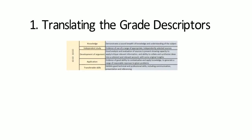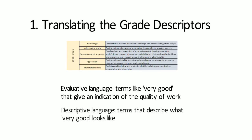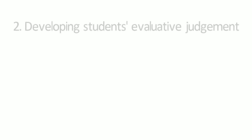Here we see an example from the new generic grade descriptors representing one grade boundary. In these types of generic grade descriptors we typically see evaluative language terms like 'very good' that are used to give an indication of the quality of work within that particular grade boundary. However, description is needed because our own judgments of what 'very good' looks like is often implicit, and we need to share with students and colleagues our own understandings so that we all understand what quality looks like and how to get there, in the context of the discipline and a specific task.